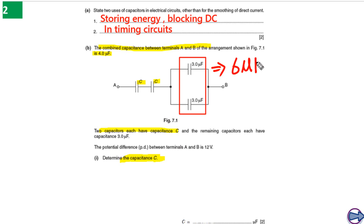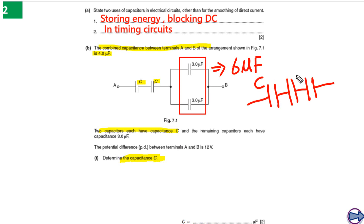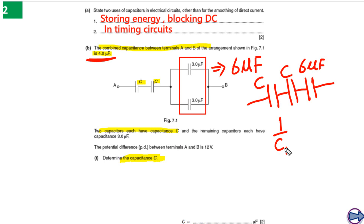Now we have three capacitors. Let me redraw the circuit. You can see we have three capacitors: this capacitor has capacitance C, this one has capacitance C, and this capacitor has capacitance equal to six microfarads. The total capacitance of this setup is four microfarads. They are connected in series, so we use the formula: one over C-total equals one over C₁ plus one over C₂ plus one over C₃ — this is opposite to resistors in parallel.